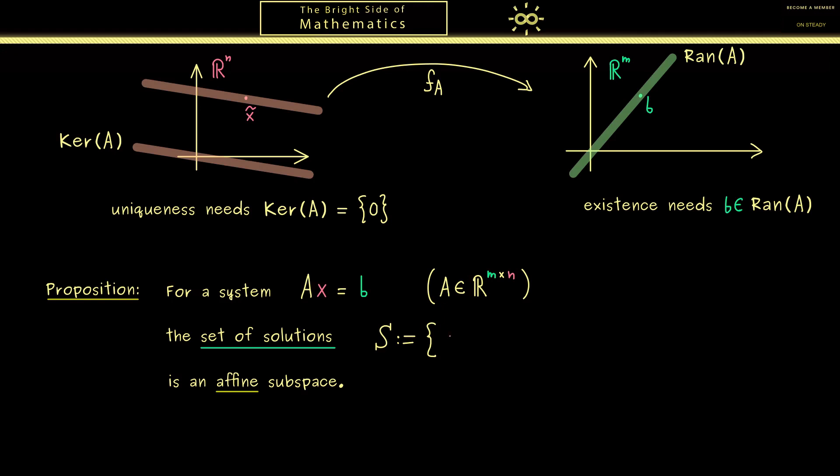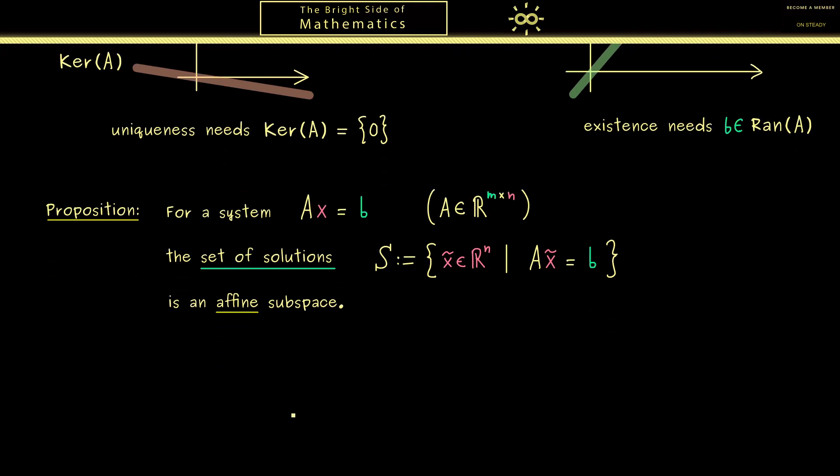Maybe you remember this term from part 6—it's just a shifted linear subspace. However, we will also write it down in this proposition again. But before we do that, I first want to define the set of solutions in a formal way. We can describe it as the set of all elements x̃ on the left-hand side, with n components, with the property that if you put x̃ into the system, it solves it.